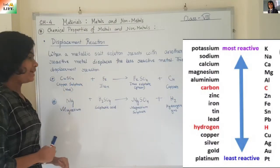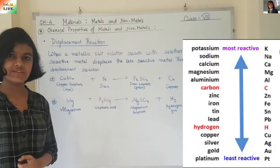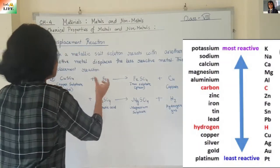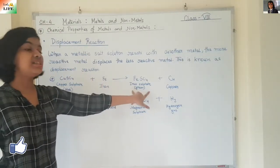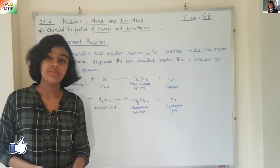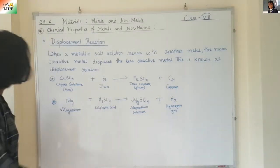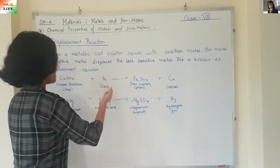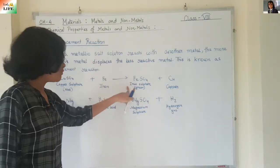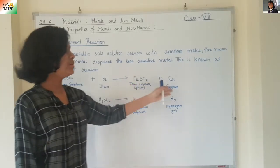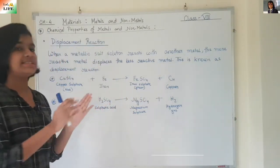So in the reaction copper sulphate plus iron gives iron sulphate plus copper — iron is the more reactive metal, so iron takes the place of copper. Since iron is more reactive than copper, it joins with sulphate to form iron sulphate. Copper is less reactive than iron, so copper can't displace iron and stays alone. Iron displaces copper and forms iron sulphate.